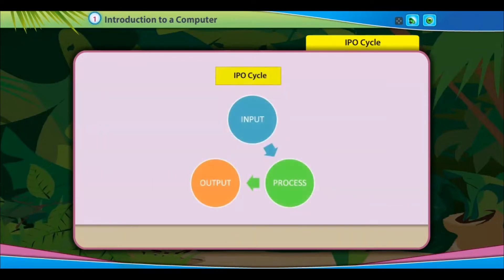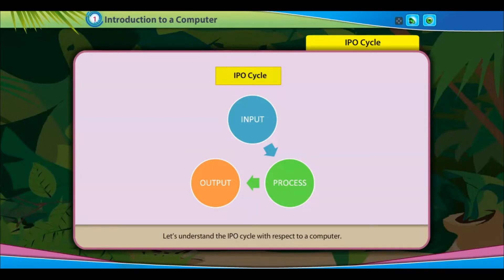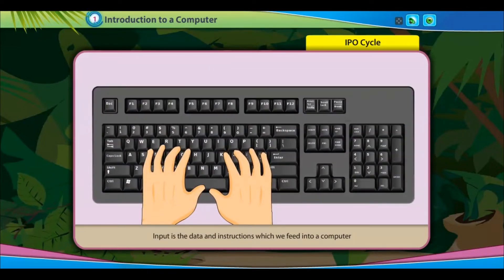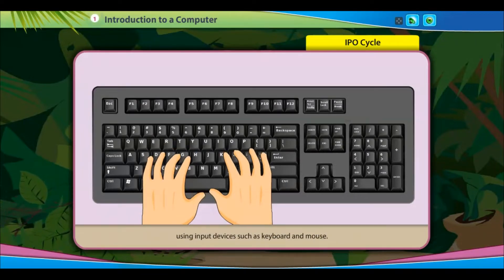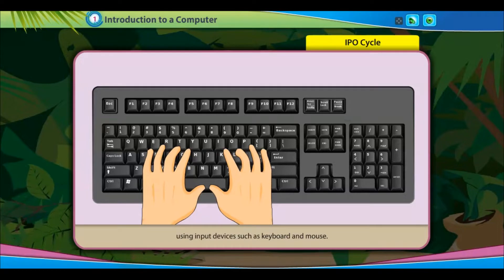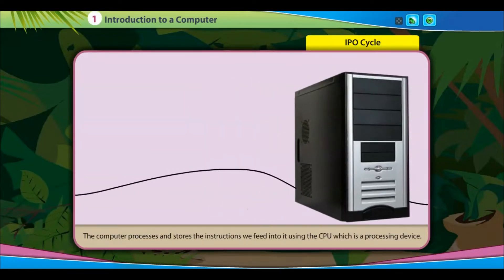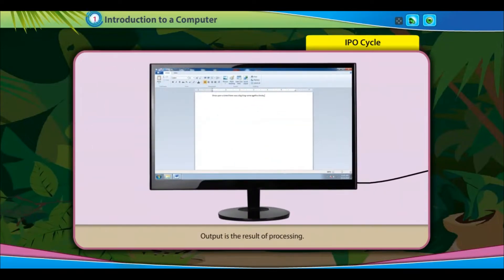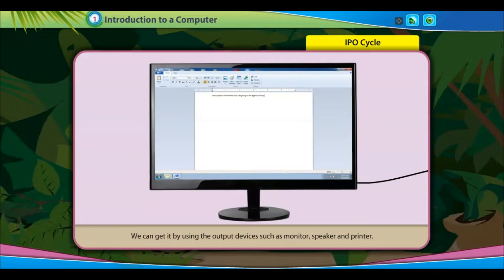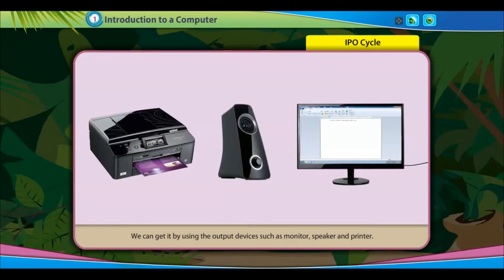IPO Cycle. Let's understand the IPO Cycle with respect to a computer. Input is the data and instructions which we feed into a computer using input devices such as keyboard and mouse. The computer processes and stores the instructions using the CPU, which is a processing device. Output is the result of processing, obtained using output devices such as monitor, speaker, and printer.